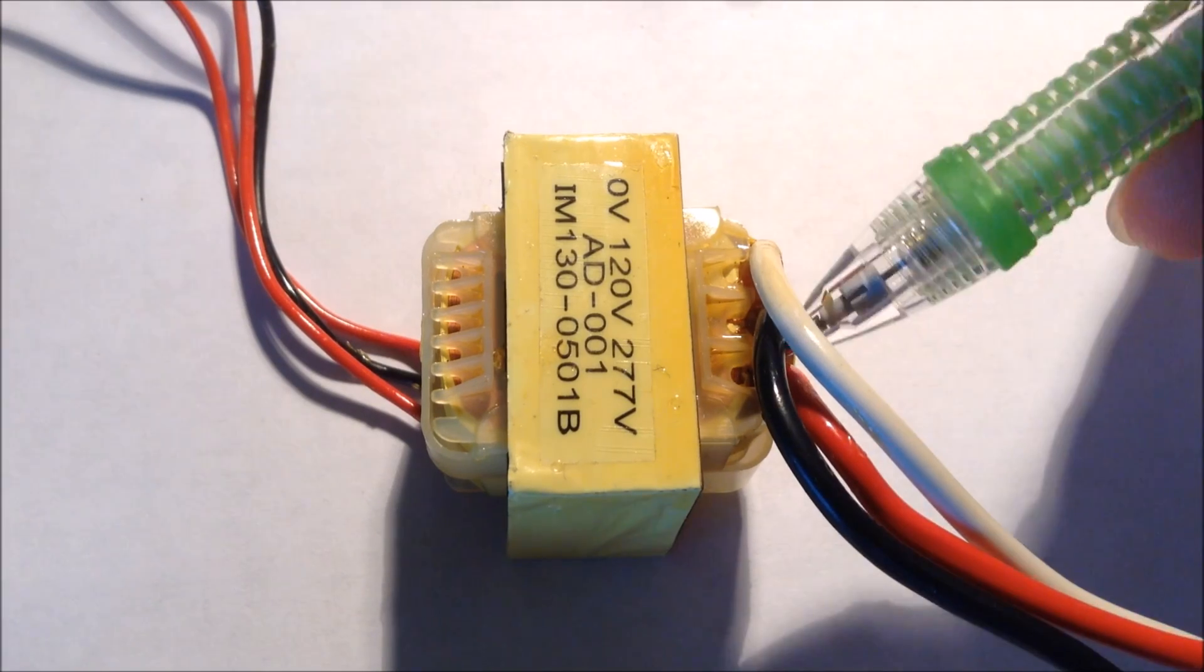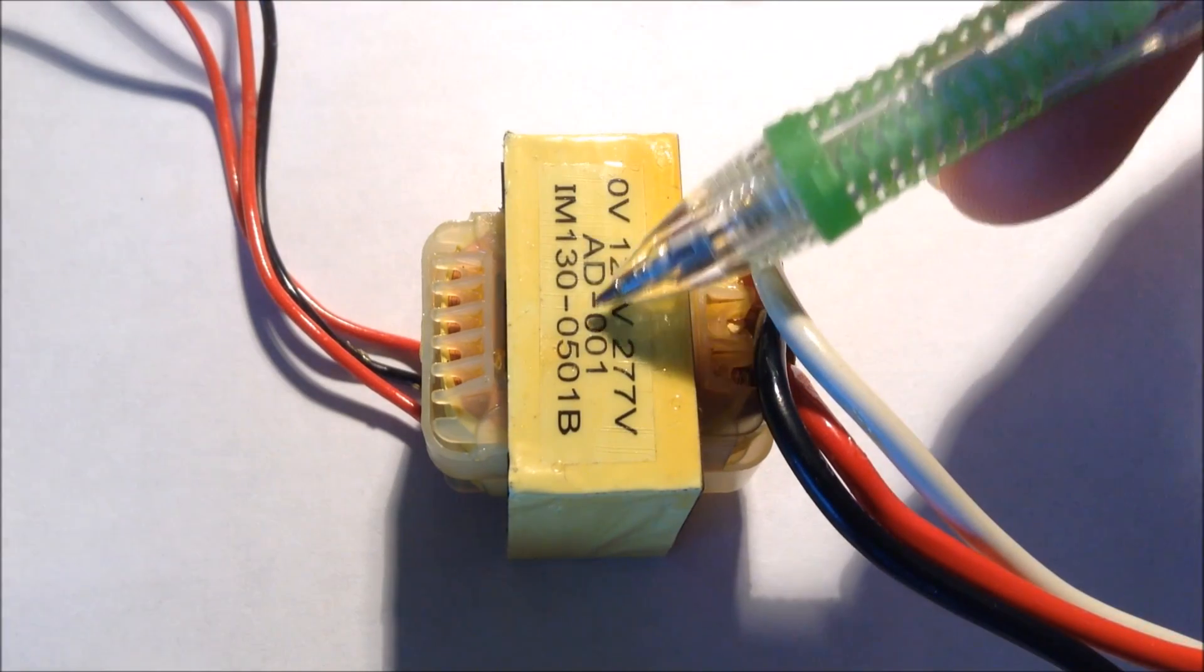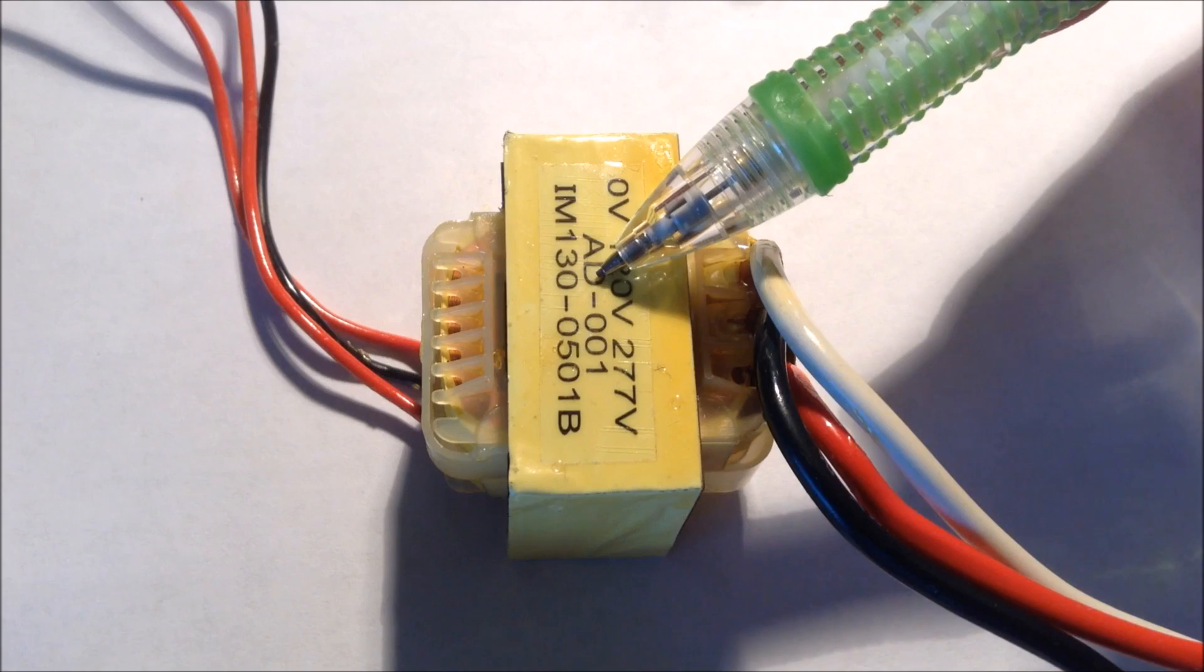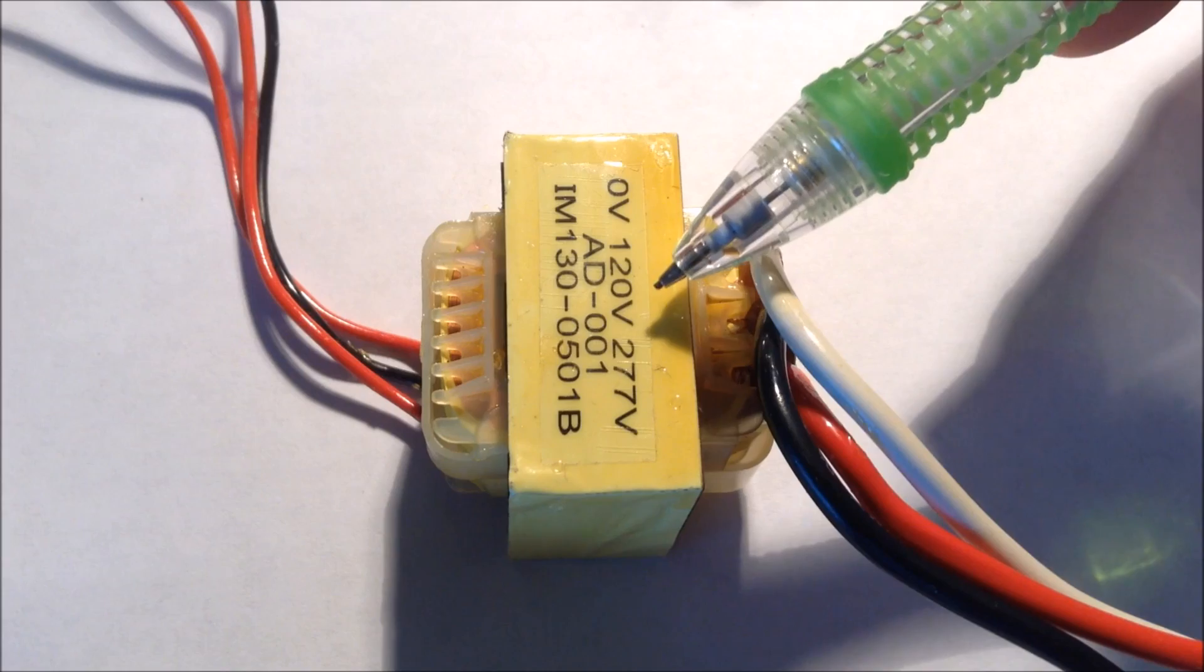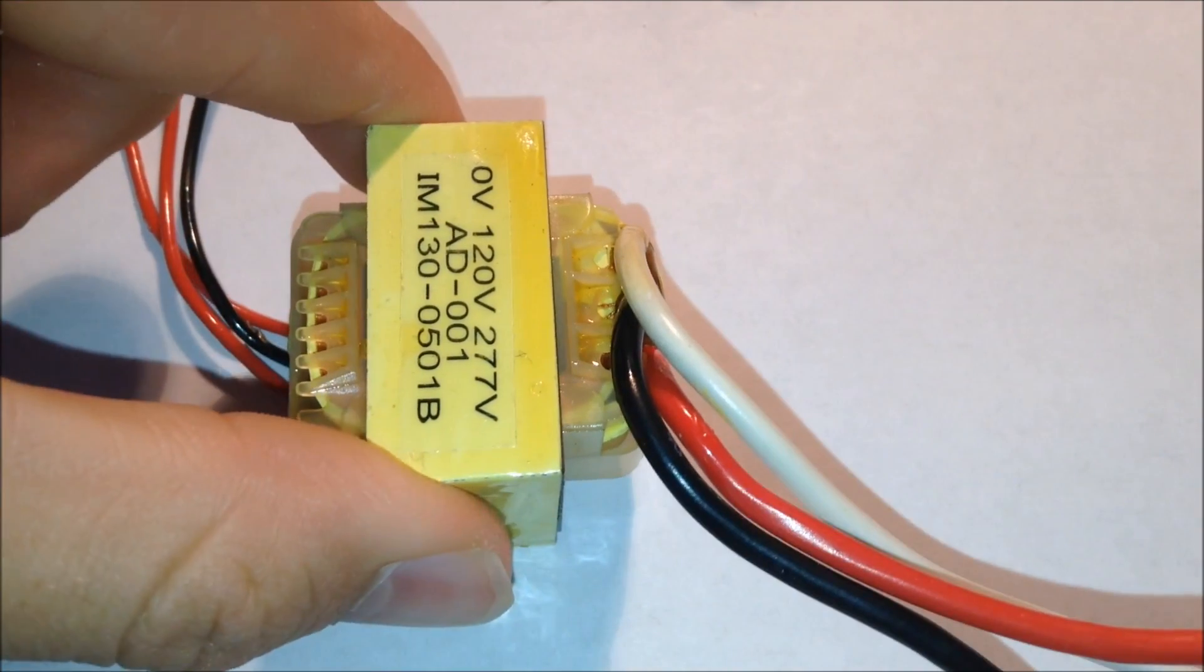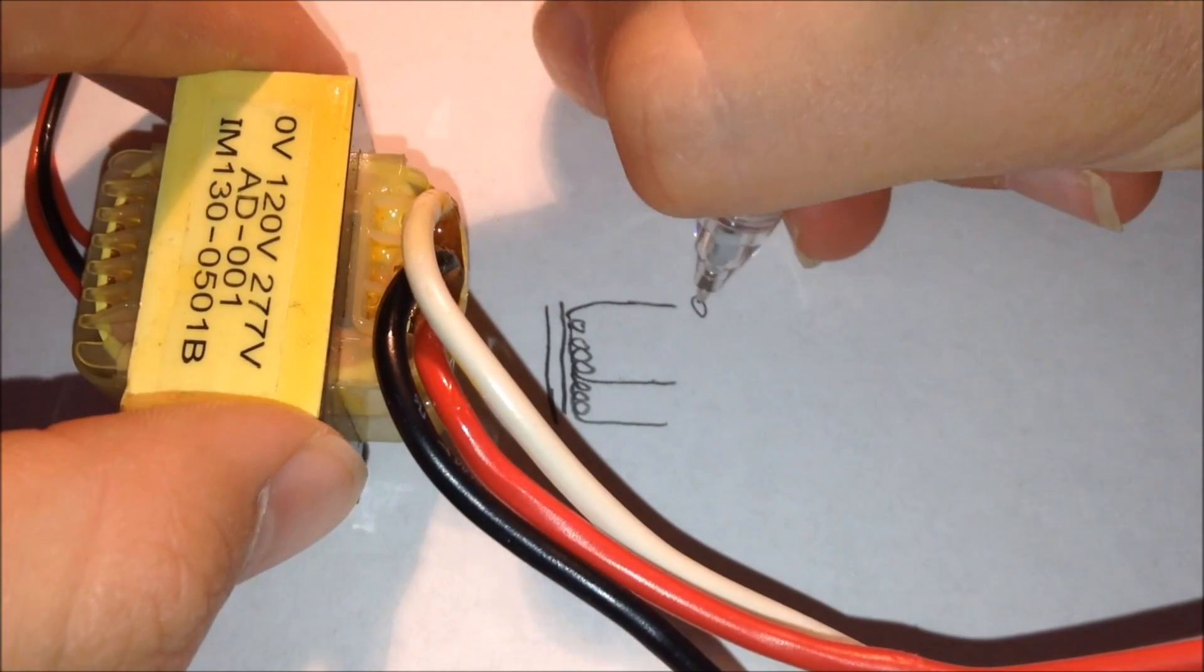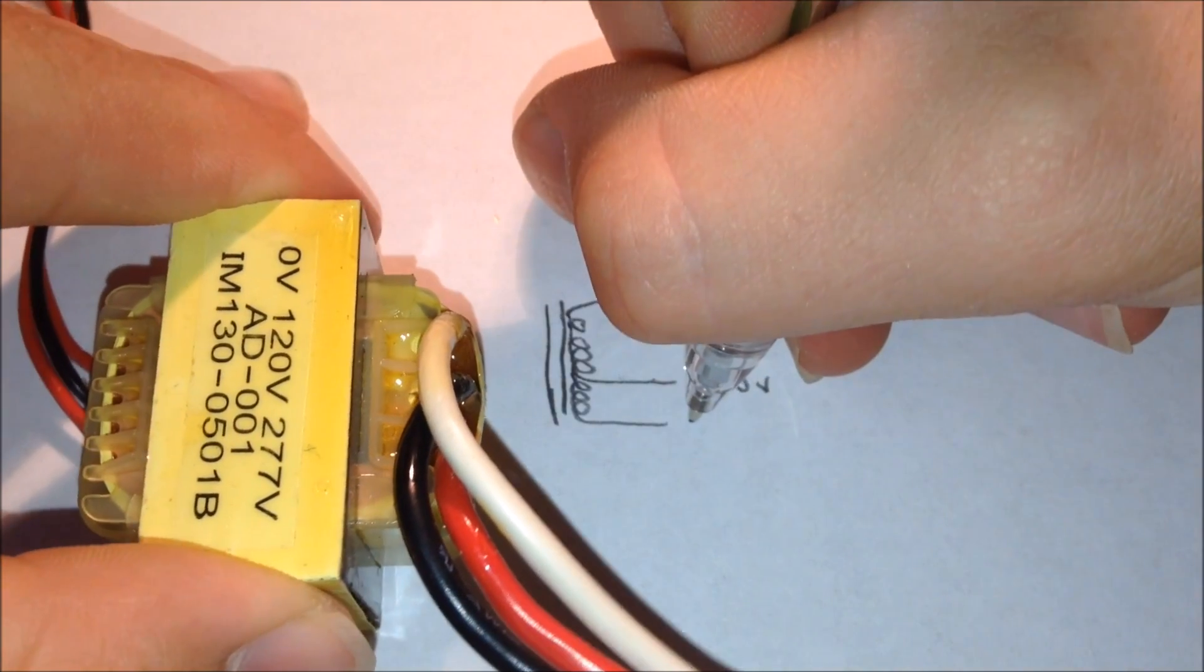This transformer has three primary taps. Now, this allows this transformer to be used as an auto transformer, which is pretty cool. Now, if you don't know what an auto transformer is, please watch my previous video on what an auto transformer is, and how it works. On the transformer you can see that the taps are labeled. There's zero volt, which is one of them. There's 120 volts, and there's 277 volts.